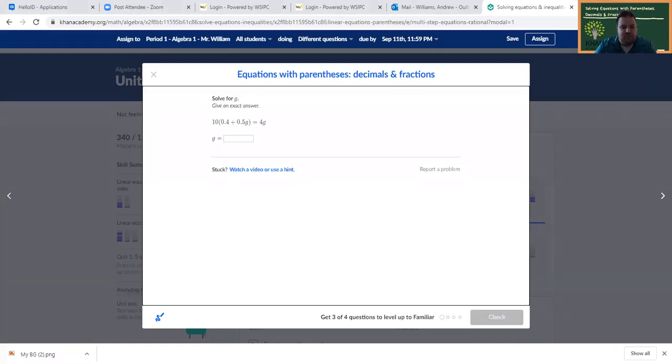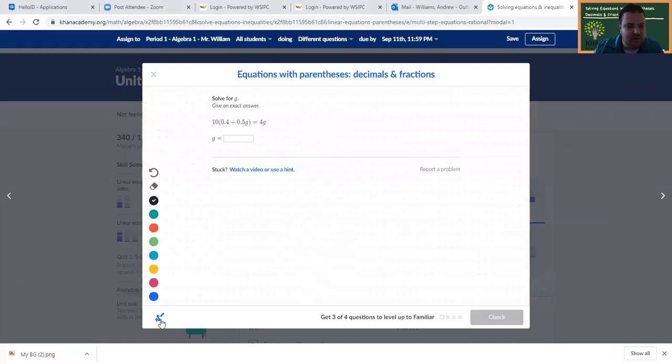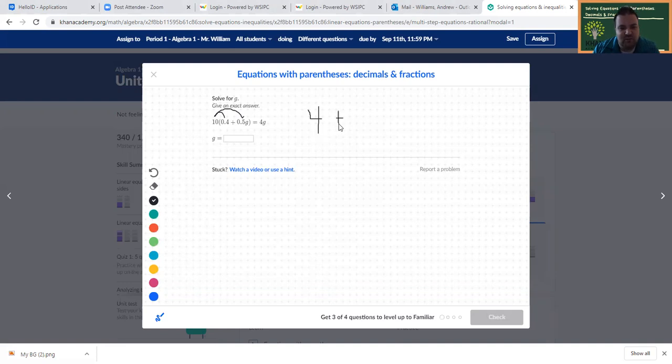Here's the first one. We have ourselves a situation where we're going to need to distribute the 10 across the parentheses to those two terms there. So we have 10 times 0.4. Now this is a nice number because 10 times anything with a decimal, you're just moving the decimal over one time. So 10 times 0.4 is going to be the same thing as 4. Anytime you have anything with a decimal in it and you're multiplying by 10, you're just moving the digit over one spot. 10 times 0.5G just turns into the same thing, so now it's 5G.